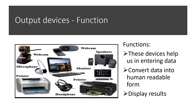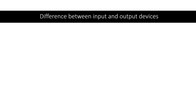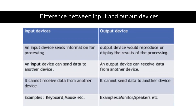Output devices help us in displaying data, convert data into human readable form, as well as help in displaying the results. Now we are clear with the functions of input and output devices. Let's know the difference between them. An input device sends information for processing, whereas an output device would reproduce or display the results of the processing.